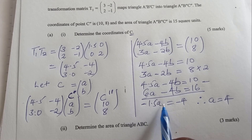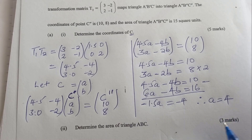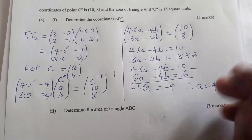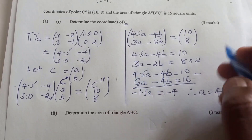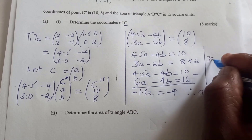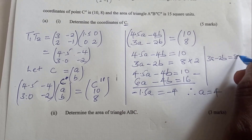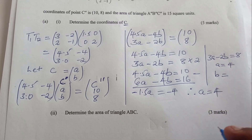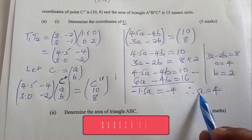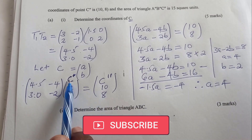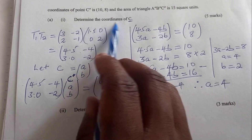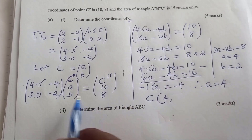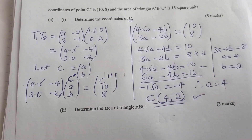Dividing both sides by -1.5, we get a = 4. To find b, substitute a = 4 into 3a - 2b = 8: 3(4) - 2b = 8, which gives b = 2. So the coordinates of C are (4, 2).